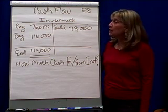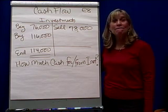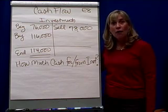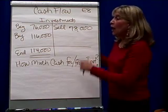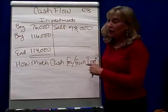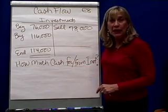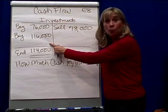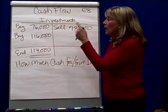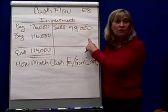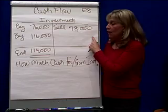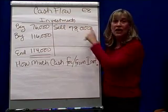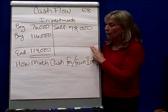We're going to take a look, in particular, at an investment account. You'll remember that the anatomy of an investment account: it's an asset, so it always has a debit beginning balance. You increase investments whenever you buy investments, and you decrease investments whenever you sell investments, and that will give you your ending balance. That's the only thing that happens in this investment account.